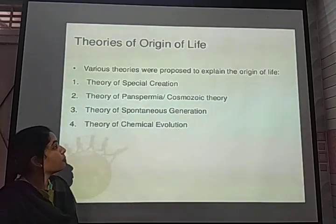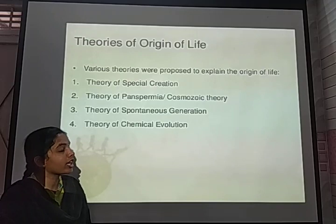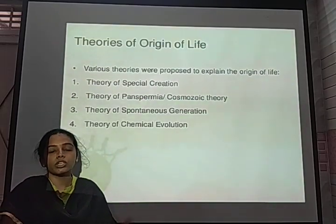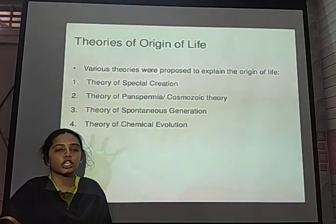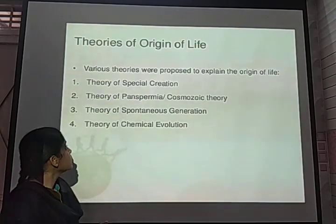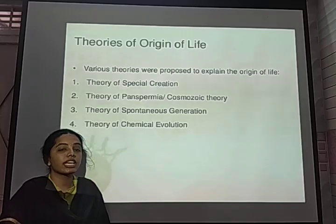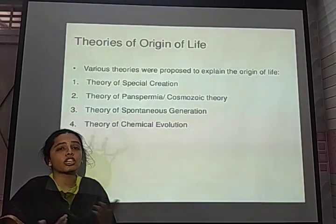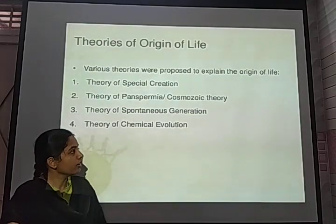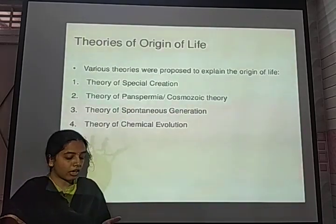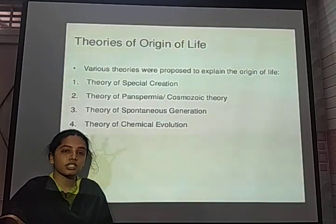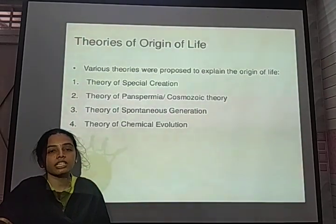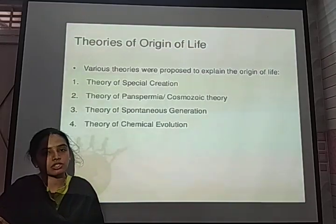The next one is the theory of panspermia, also called the cosmozoic theory, which states that spores from other planets came to the surface of earth and were converted into living organisms. The theory of spontaneous generation states that living organisms existed in a spontaneous manner. There are also two other theories: biogenesis and abiogenesis. Abiogenesis states that living organisms arose from non-living substances.